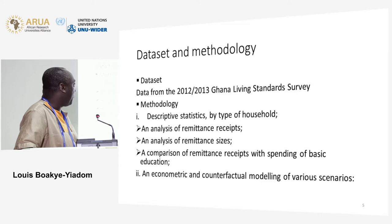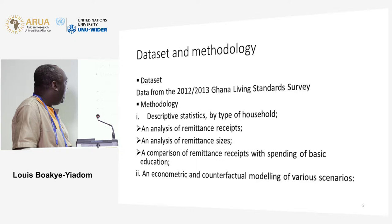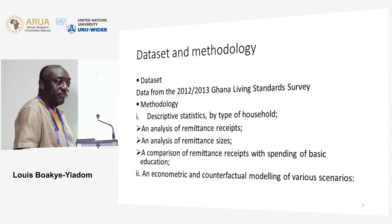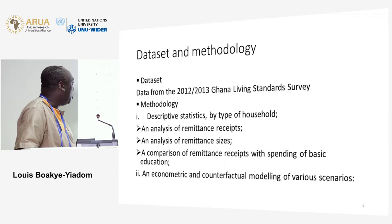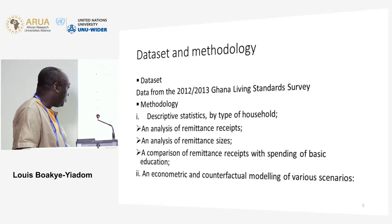For this paper we employ data from the most recent wave of the Ghana Living Standards Survey, which is the 2012–2013 dataset. In terms of methodology for the first research question, we simply employ descriptive statistics to look at remittance receipts as well as remittance sizes, and we look at various categories of households and how these differ among them.